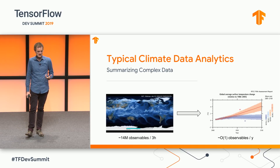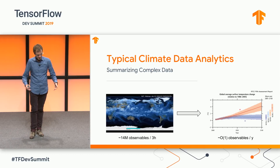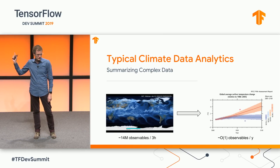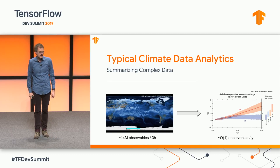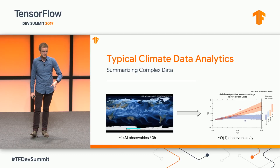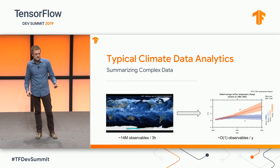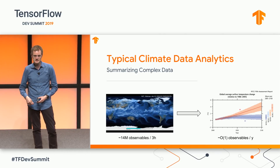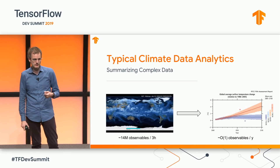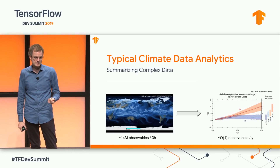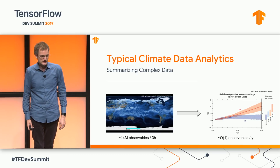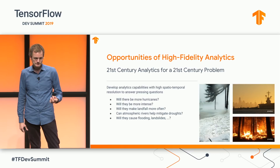We want to understand these events better. A typical climate data analysis involves simulations looking into the future up to 100 years. The output contains about 14 million observables per three-hour interval over 100 years. People usually boil this down to a couple of numbers like temperature rise or sea level rise. However, we want a geospatial analysis of climate change — how does climate change impact your life where you live?